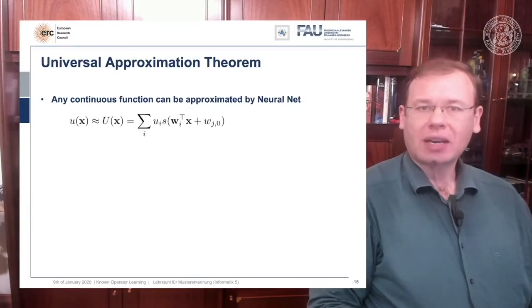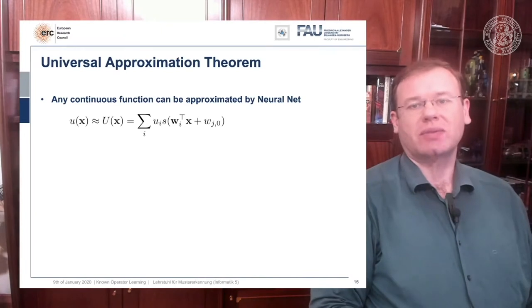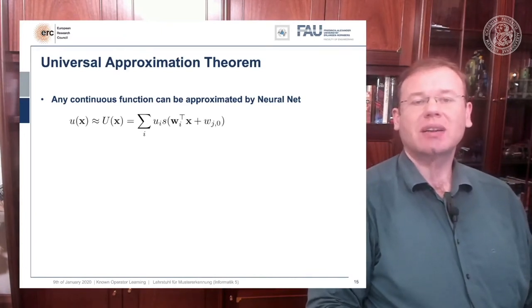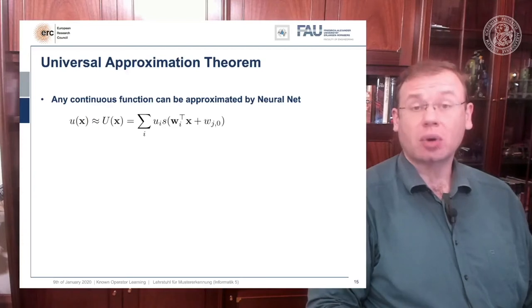We go back all the way to our universal approximation theorem. The universal approximation theorem told us that we can find a one hidden layer representation that approximates any continuous function with an approximation capital U, and this capital U is supposed to be very close and it's computed as a superposition linear combination of sigmoid functions.